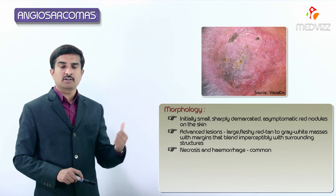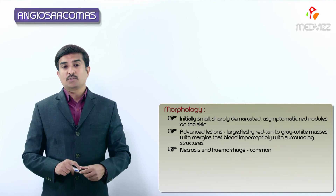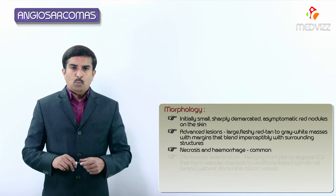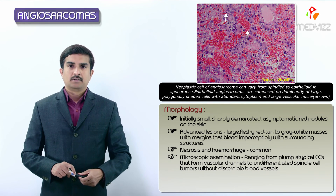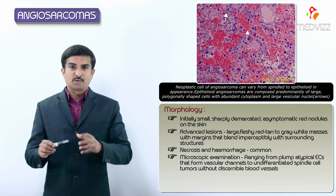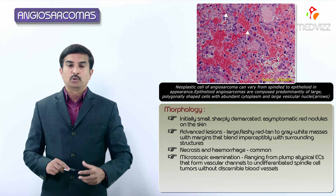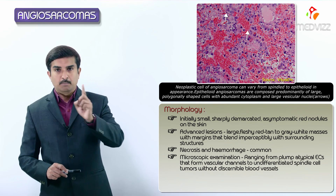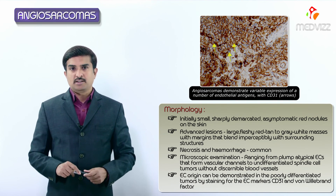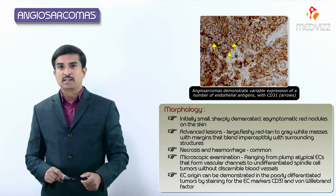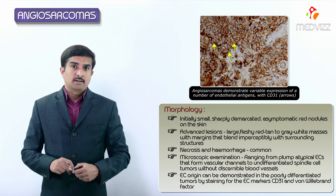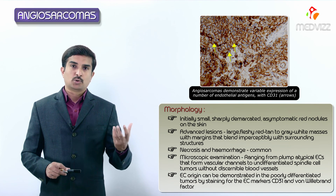Necrosis and hemorrhage of such lesions are extremely common. Once you see necrosis and ulceration, these indicate widespread advanced neoplasms. On microscopic examination, the extent of differentiation is extremely variable, ranging from plump atypical endothelial cells that form vascular channels to undifferentiated spindle cell tumors without discernible blood vessels. Endothelial cell origin can be demonstrated in poorly differentiated tumors by staining for endothelial cell markers CD31 and von Willebrand factor.